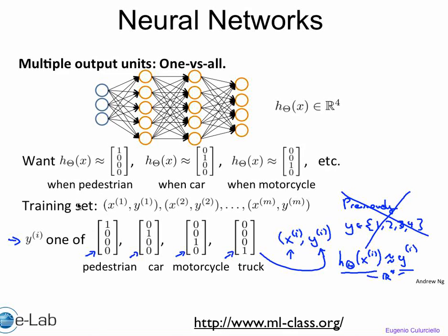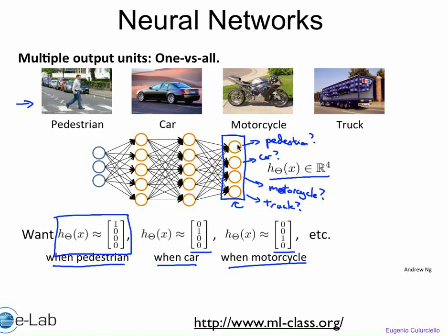In order to train this network, you're going to need to know all these weight connections. If you want the output to be correct — say, one value close to one for a pedestrian and close to zero otherwise — you'll have to set all these values. If you have 100 by 100 pixel input, then you have 30,000 weights that could go from the input to the output. Depending on how many neurons you have, you'll have even more — a ginormous amount of computation and weights.